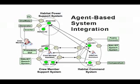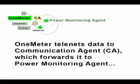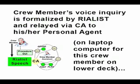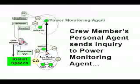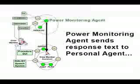Laptops for four crew members connect to their Bluetooth headsets anywhere in the Hab. The sixth laptop, the Habitat command system on the upper deck, uses a built-in microphone and loudspeakers, and displays troubleshooting procedures to the crew. As an example of operation, 1-meter telenets data via a Brahms communication agent written in Java, which forwards data to the power monitoring agent. A crew member's voice command is recognized by Realist and relayed as a structured object to the crew member's personal agent, running on one of the laptops on the lower deck. The personal agent sends the inquiry or alert request to the power monitoring agent, which is running on another Brahms virtual machine. This agent then sends a response or confirmation to the personal agent.